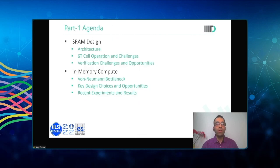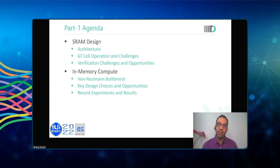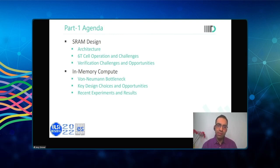So what are we going to look at today? We will begin with SRAM design: the architecture, 6T cell operation, and verification challenges and opportunities. Then, since one of my key recent interests is in-memory compute, we will look at what in-memory compute means, what the von Neumann bottleneck means, key design choices, and recent results and experiments from across the world.